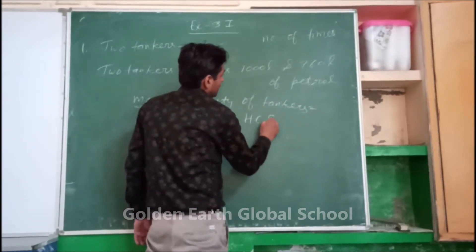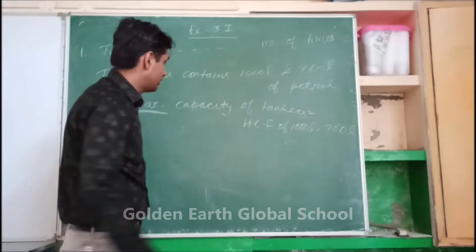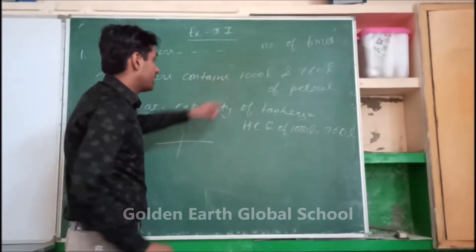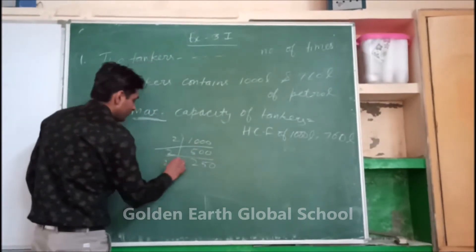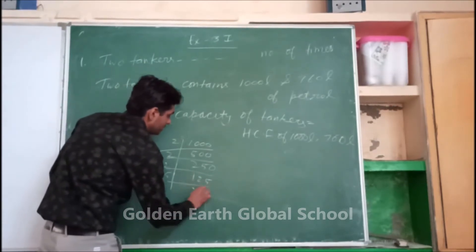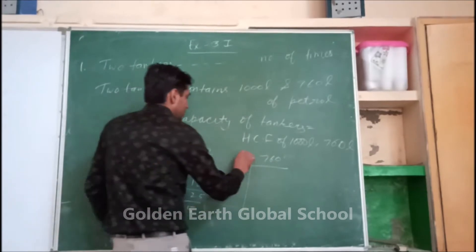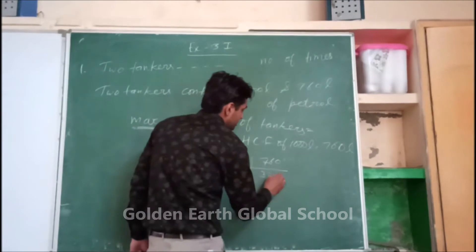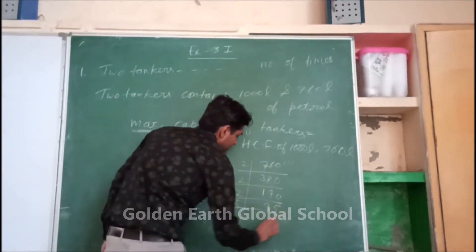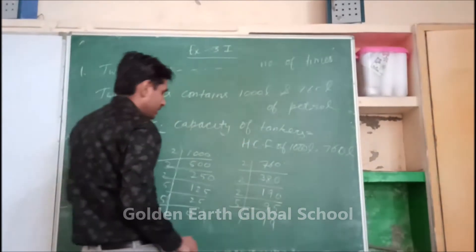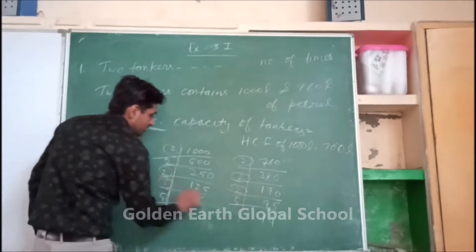HCF of 1000 and 760 liters. You know how to find out HCF — by prime factorization. For 1000: divide by 2 to get 500, then 250, then 125; then divide by 5 to get 25, then 5. For 760: divide by 2 to get 380, then 190, then 95; divide by 5. Now look carefully: 2 is common, this 2 is also common, this 2 is common, and this 5 is also common.